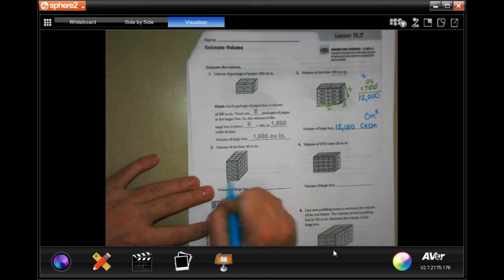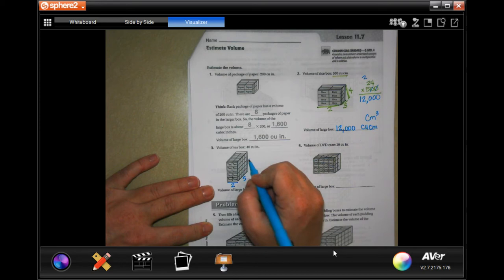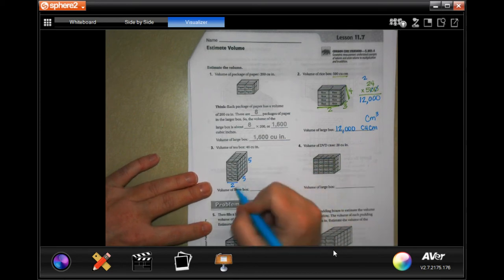Same thing on this one. Two by one, two, three, four, five. By one, two, three, four, five. So two times five is 10 times five is 50.